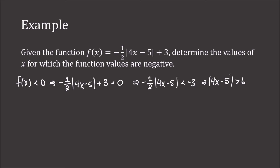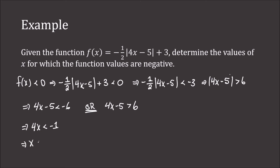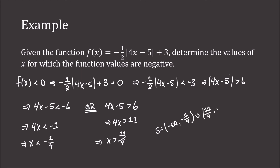Using the interpretations we studied before, this says that we must have 4x minus 5 being less than negative 6, or 4x minus 5 being greater than positive 6. We solve each inequality individually. Adding 5, we get 4x is less than negative 1. Dividing by 4, x is less than negative one quarter. Or, for the second: 4x is greater than 11, which means x is greater than 11 fourths. So our solution is the interval negative infinity to negative one quarter, union with 11 fourths to infinity.